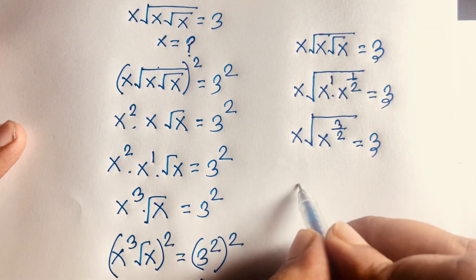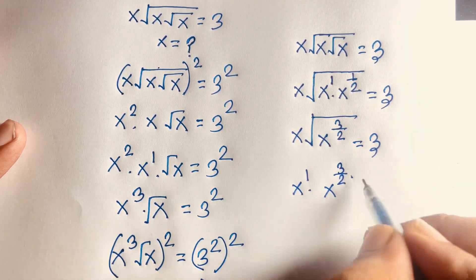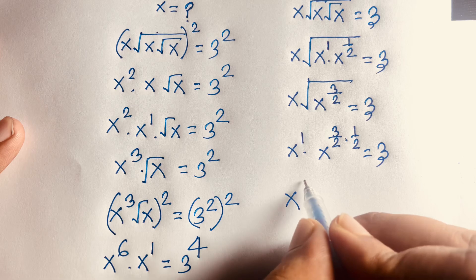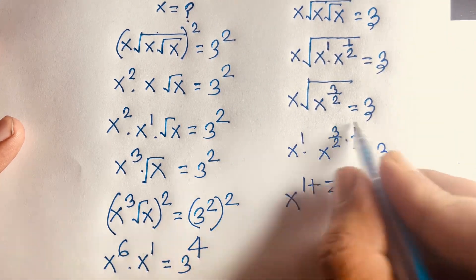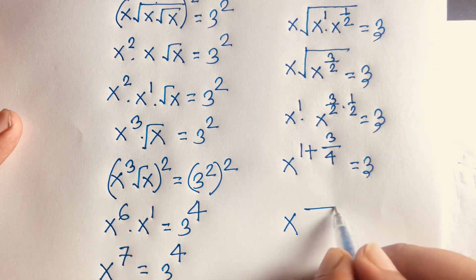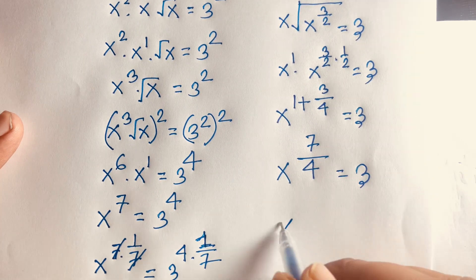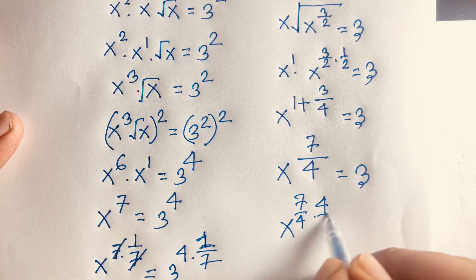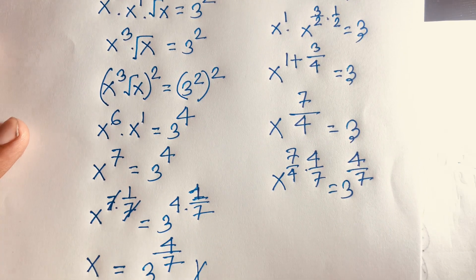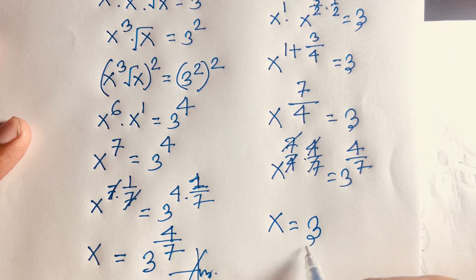We have x to the power 1 times x to the power 3 over 2, and the square root gives 1 over 2. Adding exponents: 1 plus 3 over 2 plus 1 over 2 gives 4 over 4, which leads to x to the power 7 over 4, equal to 3. Raising both sides to the power 4 over 7, the 7s and 4s cancel, giving x equals 3 to the power 4 over 7.